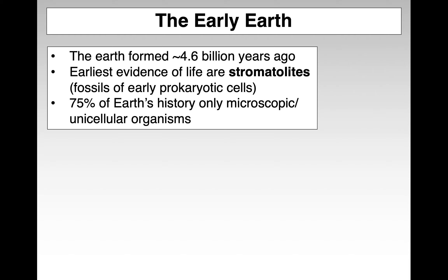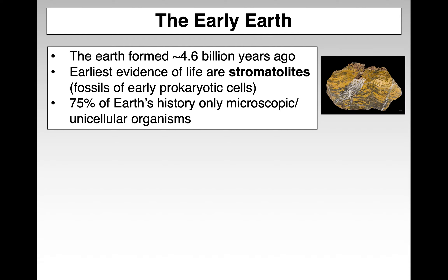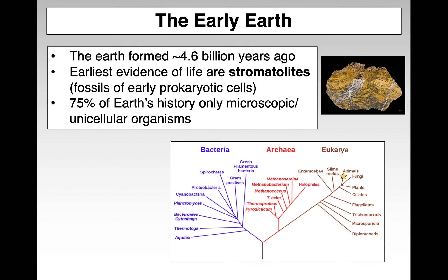So early earth was a very hostile environment. The earth is thought to have formed about 4.6 billion years ago, and the earliest evidence of life are called stromatolites — the early prokaryotic fossils. About 75% of the earth's history had only microscopic unicellular organisms.